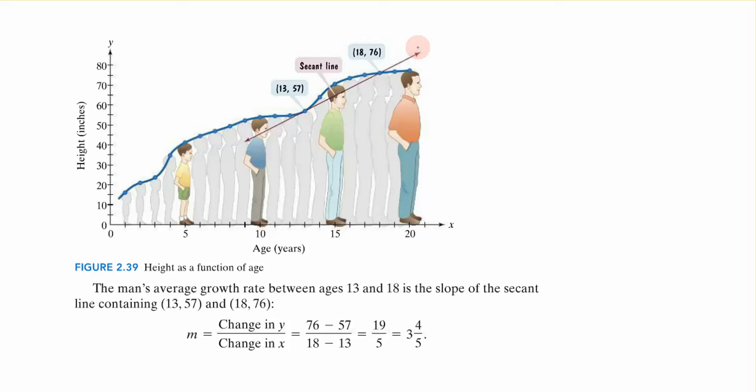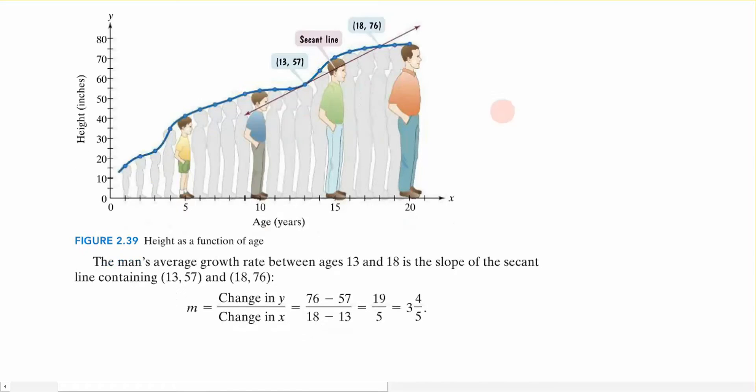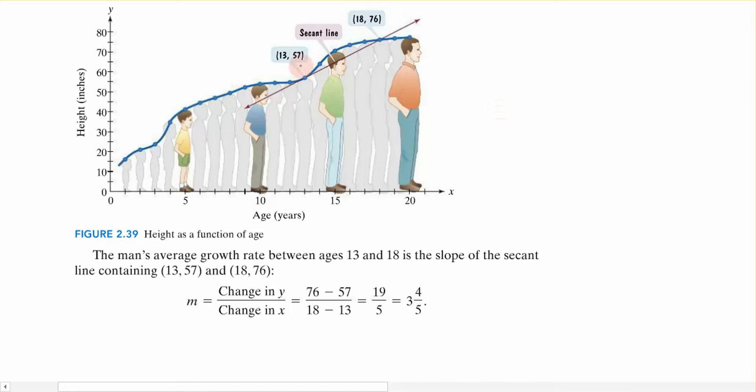And if we apply that to this particular scenario or the average rate of change idea, what that says is that I can come up with the average rate of growth between 13 and 18 for a man. So a man's average growth rate between the ages of 13 and 18 can be calculated using the slope.